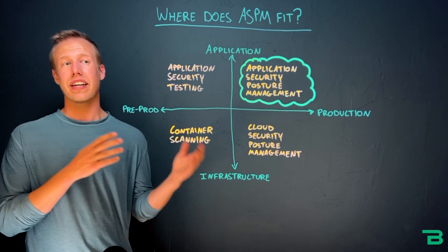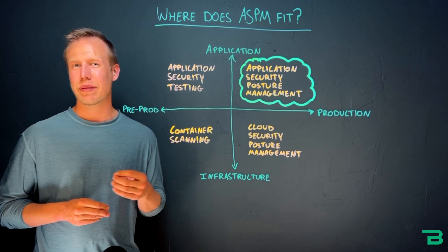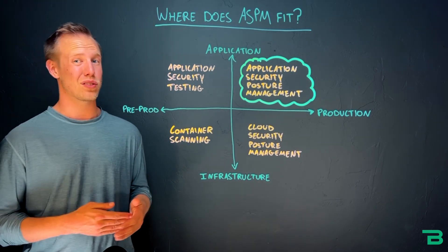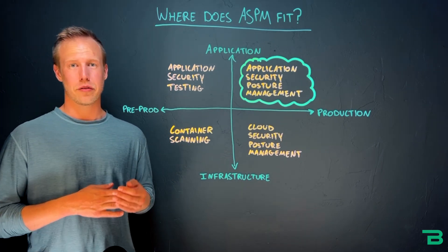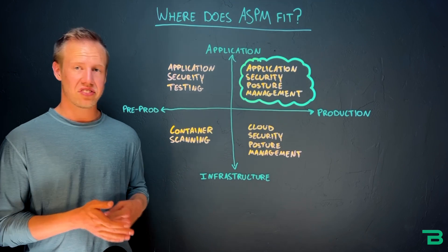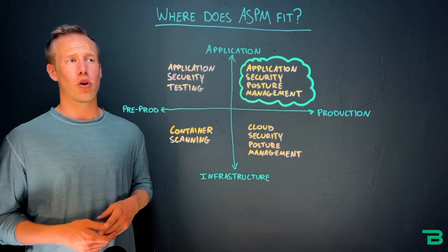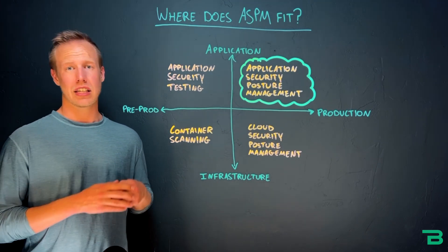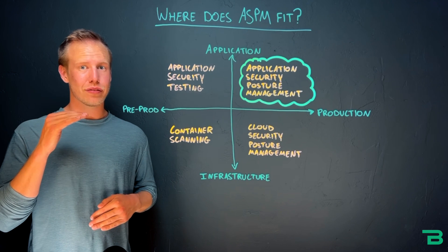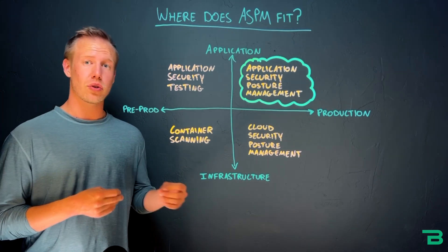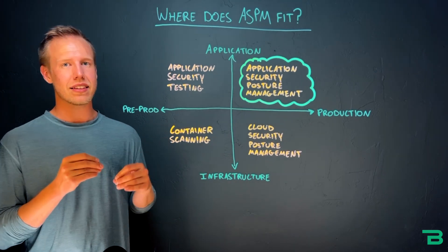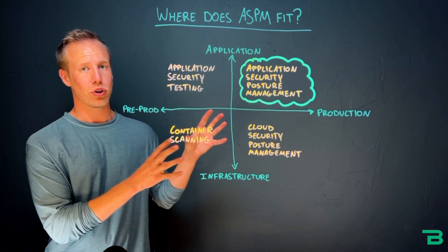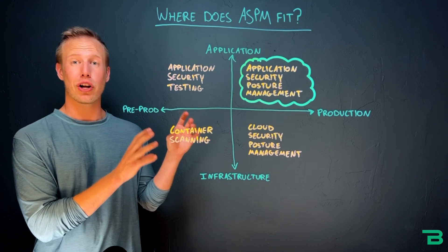If you look at application security, for a long time it's been application security testing tools — SAST, DAST, and SCA. Are we able to find these vulnerabilities? You end up with a giant list of vulnerabilities and you say, okay, we're going to do our best to remediate these things. Then we send our code out into the world and we hope it worked.